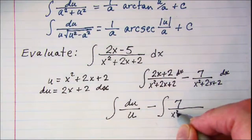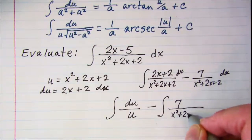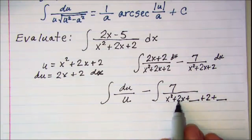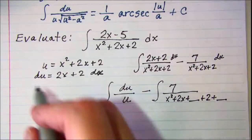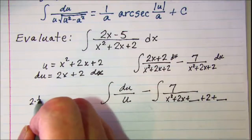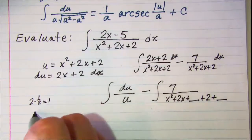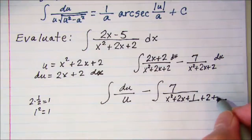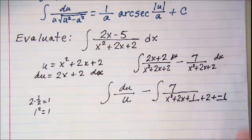I have x squared plus 2x plus something and then my plus 2 and then plus something. So my coefficient here is 2 so half of that and then square that and add it and then I'll subtract it right there.